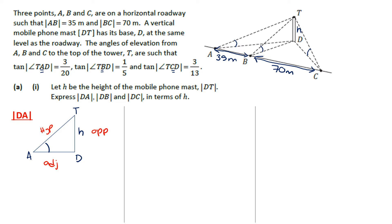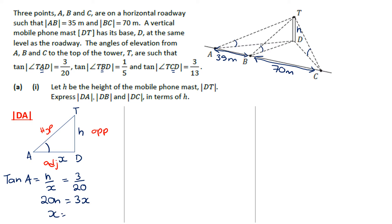I'm going to let DA be X. So the tan of A is opposite over adjacent, which is H over X, and that equals 3 over 20 as given. Rearranging, I get 20H equals 3X, so X equals 20H over 3, which is DA.